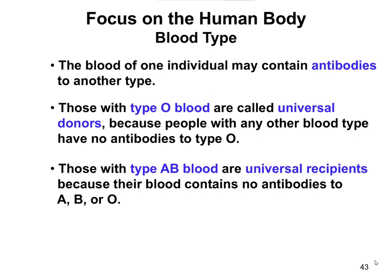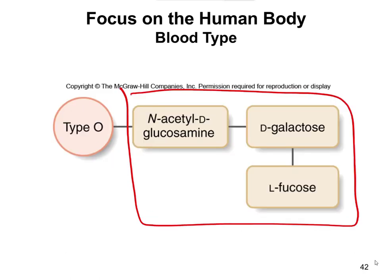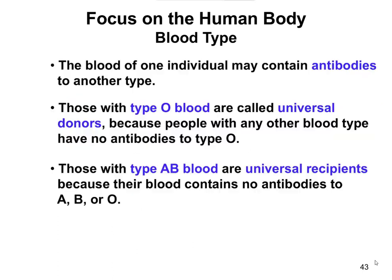People with type AB blood are universal recipients because they can take blood from anyone. If you get type A blood, your body recognizes that N-acetyl-D-galactosamine as normal. If you get type B blood, it recognizes the D-galactose as normal. And if you get type O blood, there's nothing for your body to recognize as foreign. So that's how blood typing works — it has everything to do with the sugars attached to the protein on your red blood cells, and whether you can accept a particular blood type in a transfusion depends on the antibodies your body has.